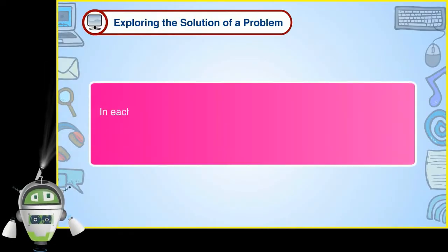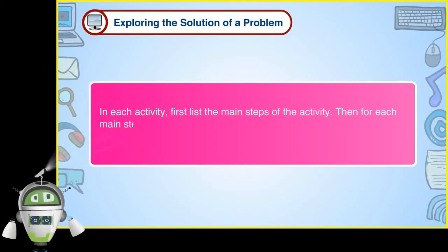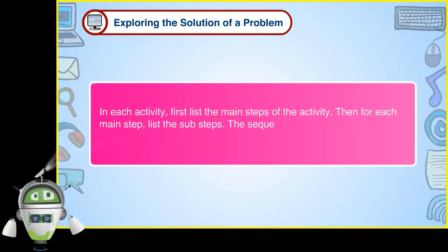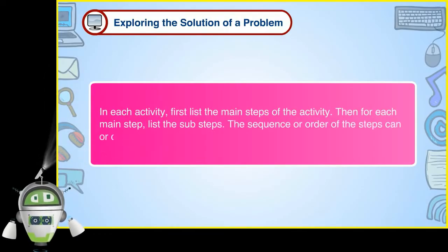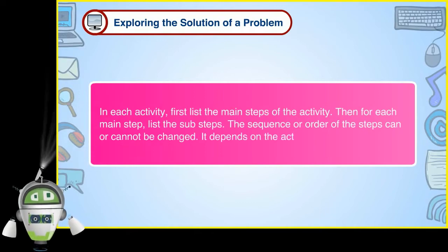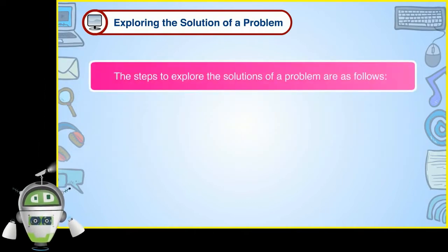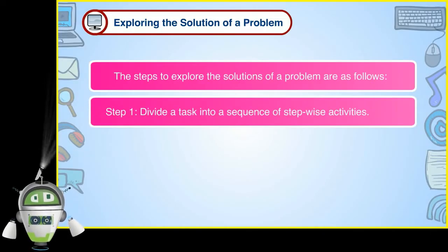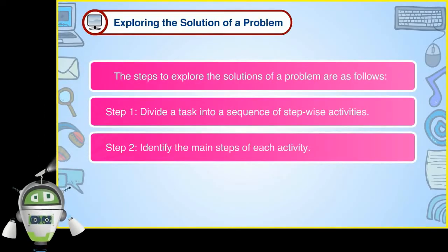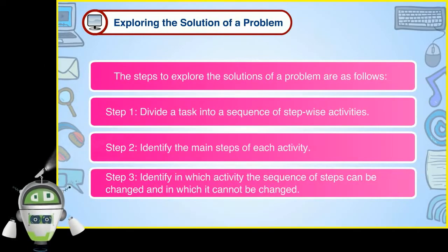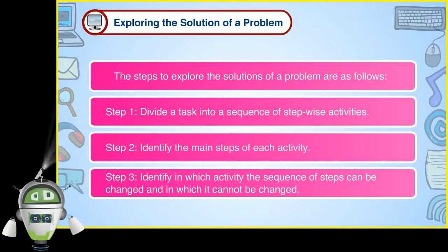In each activity, first list the main steps of the activity. Then for each main step, list the sub-steps. The sequence or order of the steps can or cannot be changed — it depends on the activity. The steps to explore the solutions of a problem are: Step 1 — Divide a task into a sequence of stepwise activities. Step 2 — Identify the main steps of each activity. Step 3 — Identify in which activity the sequence of steps can be changed and in which it cannot.